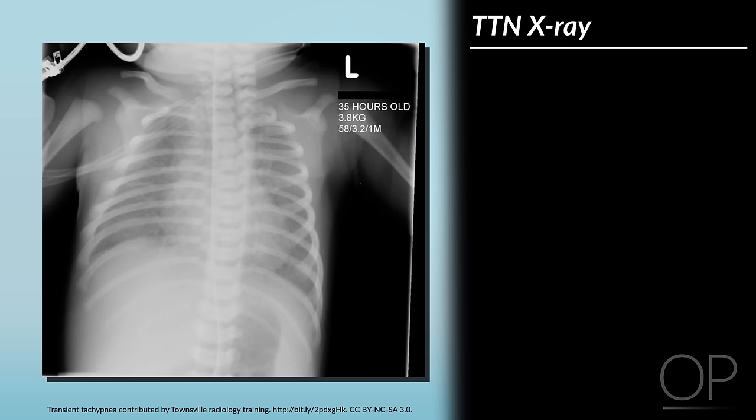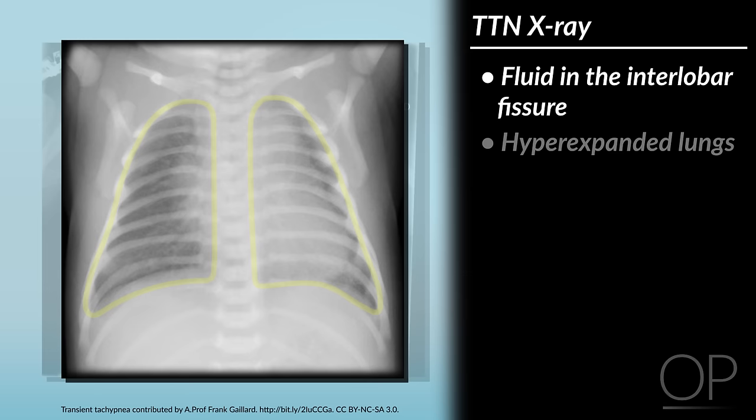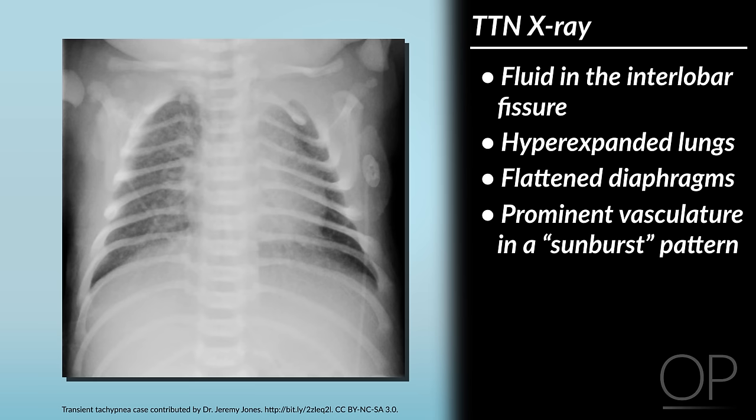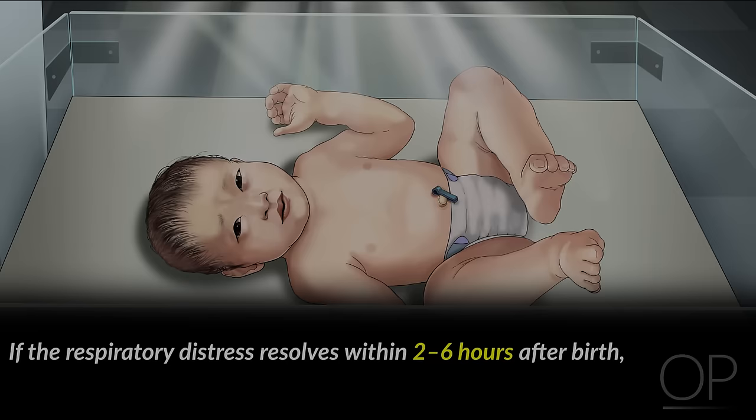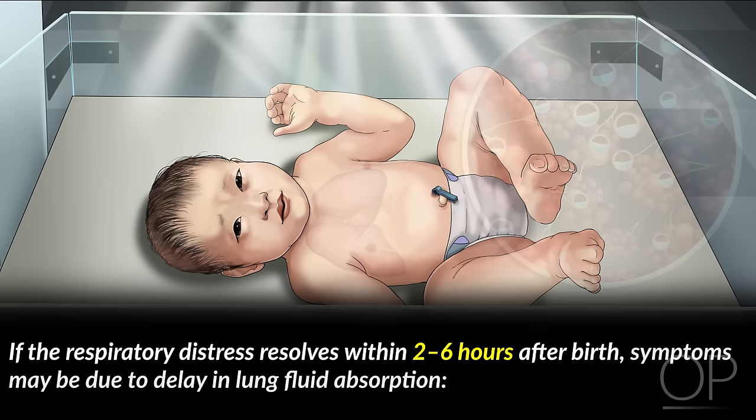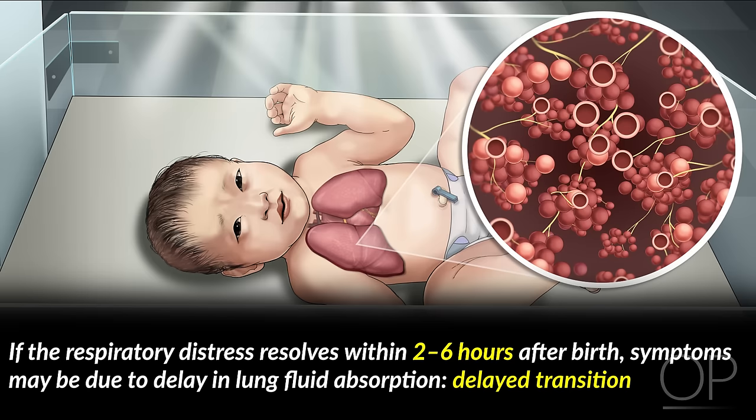TTN is a clinical diagnosis, but on chest x-ray you can often see fluid in the interlobar fissure as well as hyperexpanded lungs with flattened diaphragms, prominent vasculature in a sunburst pattern, and sometimes alveolar edema appearing as fluffy densities. In most infants, the respiratory symptoms will resolve by 48 to 72 hours of life. If the respiratory distress resolves within the first two to six hours after birth, these symptoms may be due to a brief delay in lung fluid absorption, and is often termed delayed transition instead.